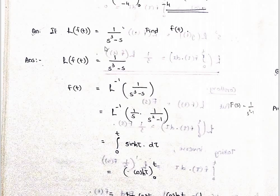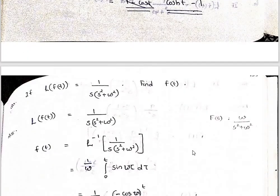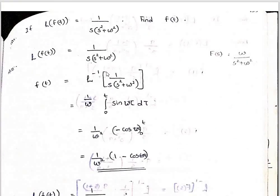Another example: 1 divided by s cubed minus s. Take inverse transform: rewrite as 1 by s times (1 over s squared minus 1). The inverse of 1 over s squared minus 1 involves sinh or sin terms. Integrate: minus cos gives the value. Then integrate once to get the final answer.